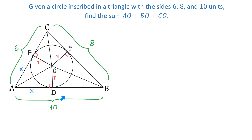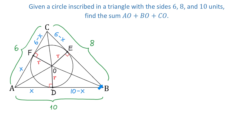If AB is 10 units and AD is X units, then BD will be equal to 10 minus X. And if AC is 6 units and AF is X units, then CF will be equal to 6 minus X. And if CF is 6 minus X, then CE is also 6 minus X. And if BD is 10 minus X, then BE is also 10 minus X.